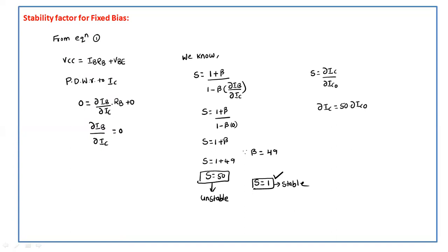This is not a valid biasing circuit. To improve the stability factor, we will go to the next biasing circuit — that is, emitter feedback bias, which we will discuss in the next class. Fixed bias is not suitable to maintain a stable operating point, so we will go for the next biasing circuit, emitter feedback bias.